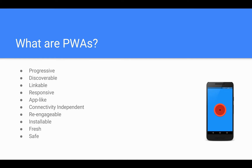A Progressive Web App must also be responsive — this is self-explanatory; it must use responsive web design and look great on all devices. It must look and feel like an app, and it should be connectivity independent, meaning it should work well even in areas of low connectivity or possibly even offline. We'll cover that shortly when we tackle service workers and look at some code examples.